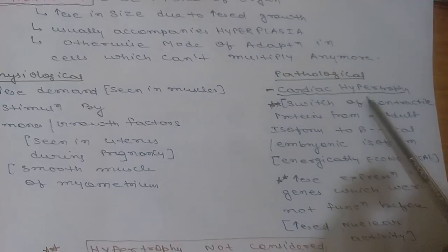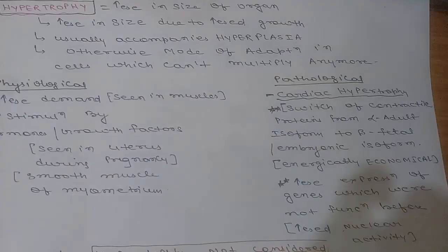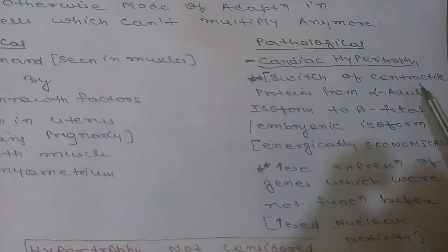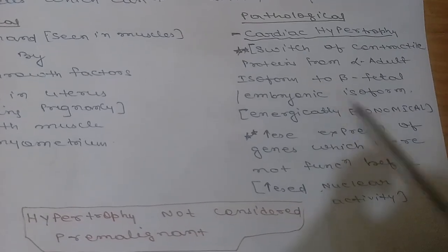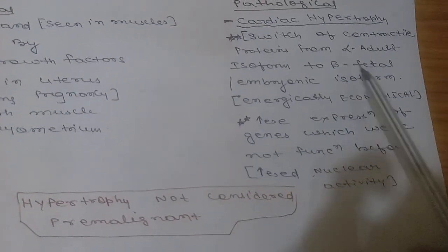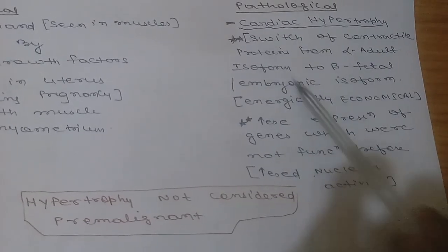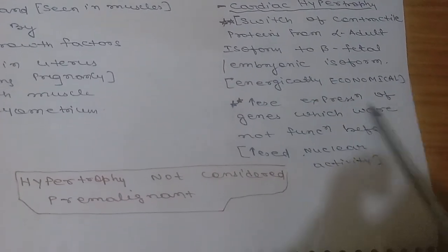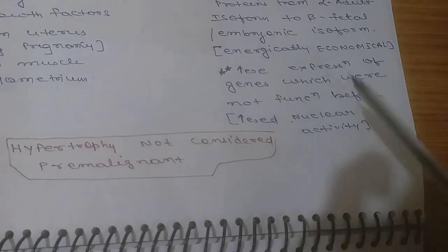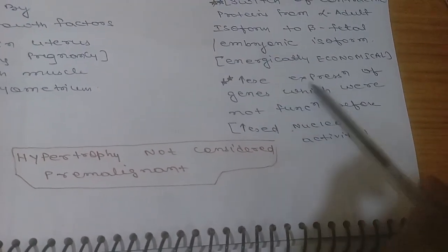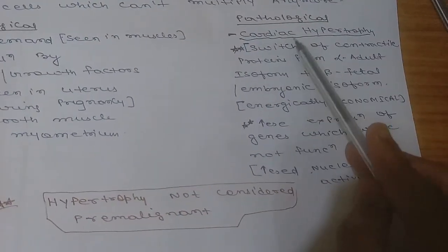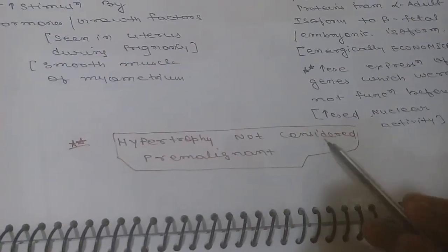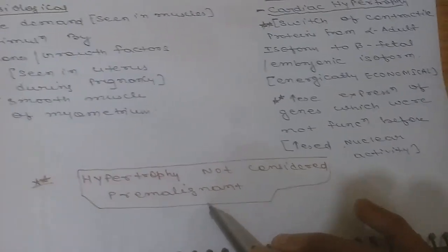Pathological hypertrophy: cardiac hypertrophy is a key example. In this, there is switching of contractile protein from alpha adult isoform to beta fetal/embryonic isoforms for energy conservation. The second mechanism is increased expression of genes that were not functioning before, increasing nuclear activity. These two mechanisms are responsible for cardiac hypertrophy. Hypertrophy is not considered premalignant because malignancy involves increasing number, not just increasing size.